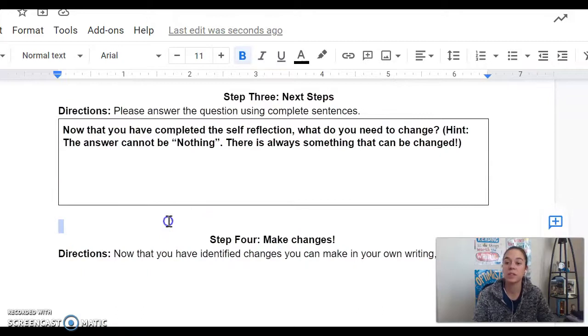Then finally, step three, which is not as colorful or fun, but important. Right here, you're going to say what you need to change. And like I said, the answer cannot be nothing. There's always something to change. Always, always, always. So please make sure you go in there and talk about what you want to go back and tighten up.